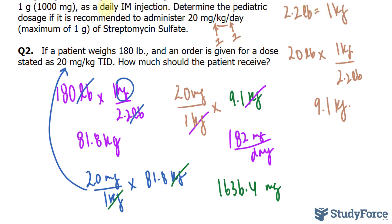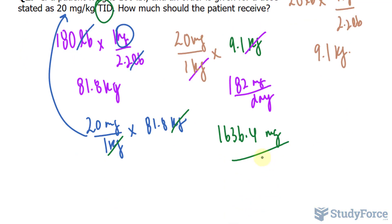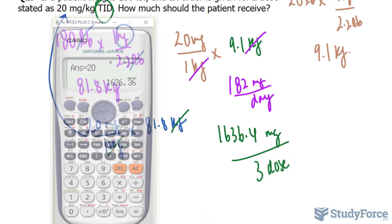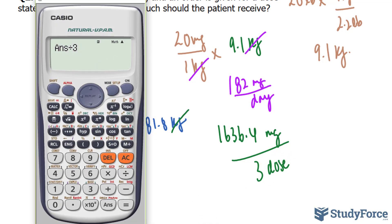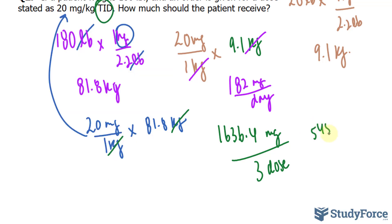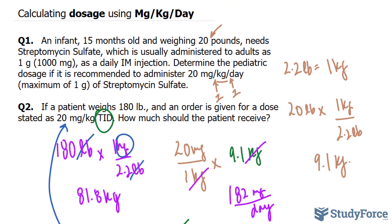That's for the whole day, not three times a day. Because unlike question number one where it was per day, this one is three times per day. So technically, this number is being divided by three doses. Dividing 1,636.4 by three doses gives us how much should be given per each dose, which is 545.5 milligrams per every one dose. And there you have it — two examples on how to calculate dosage when given in milligrams per kilograms per day.